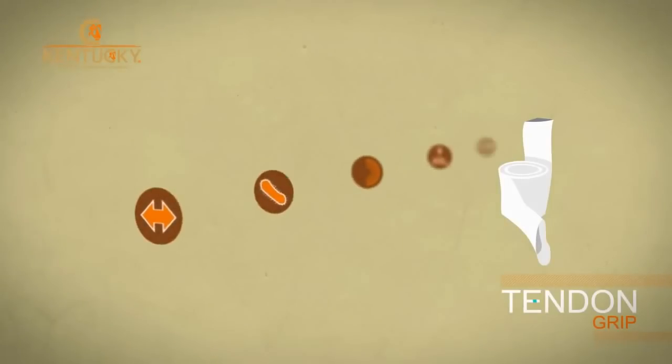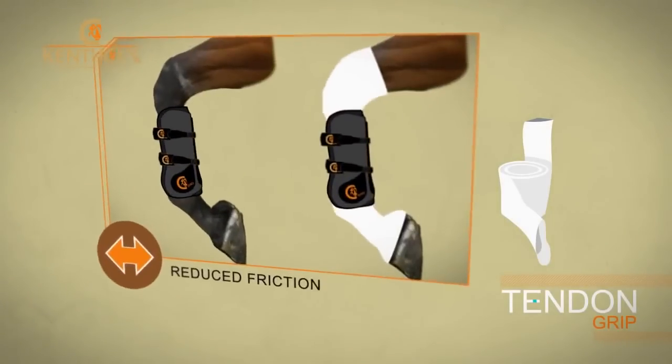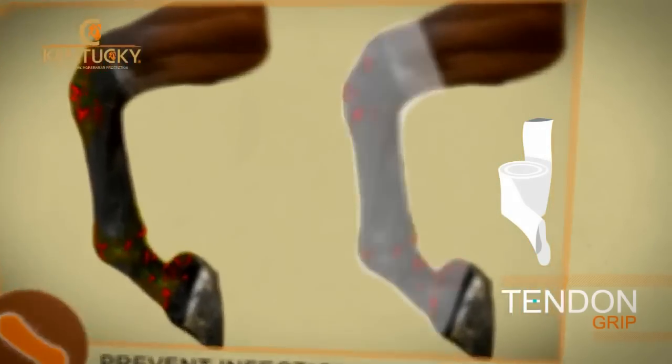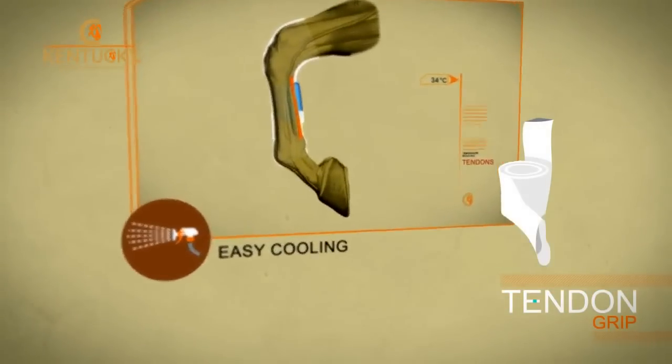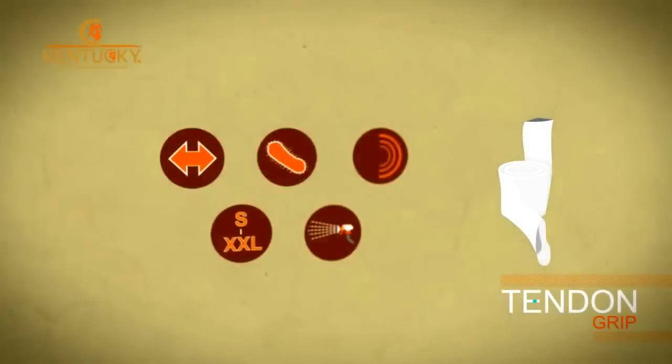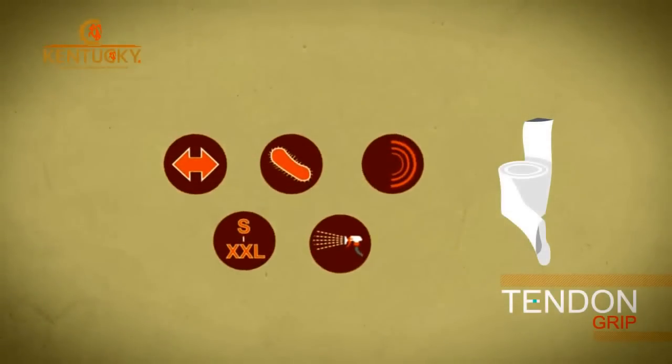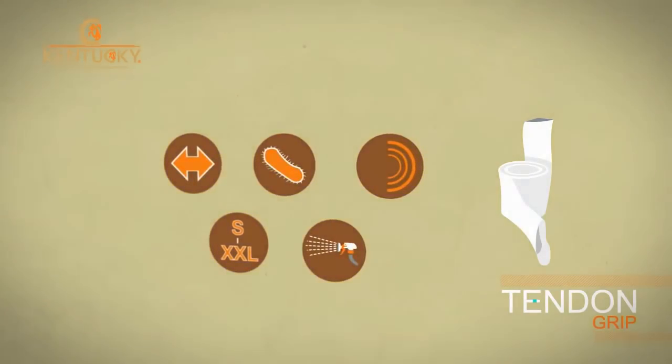The Tendon Grip, a trustworthy, versatile, yet simple elastic tube developed by Kentucky Horsewear, offering all these advantages at an incredibly low price. As our worldwide sales and rider testimonials prove, the Tendon Grip is one innovative equine product which your horse shouldn't be without.